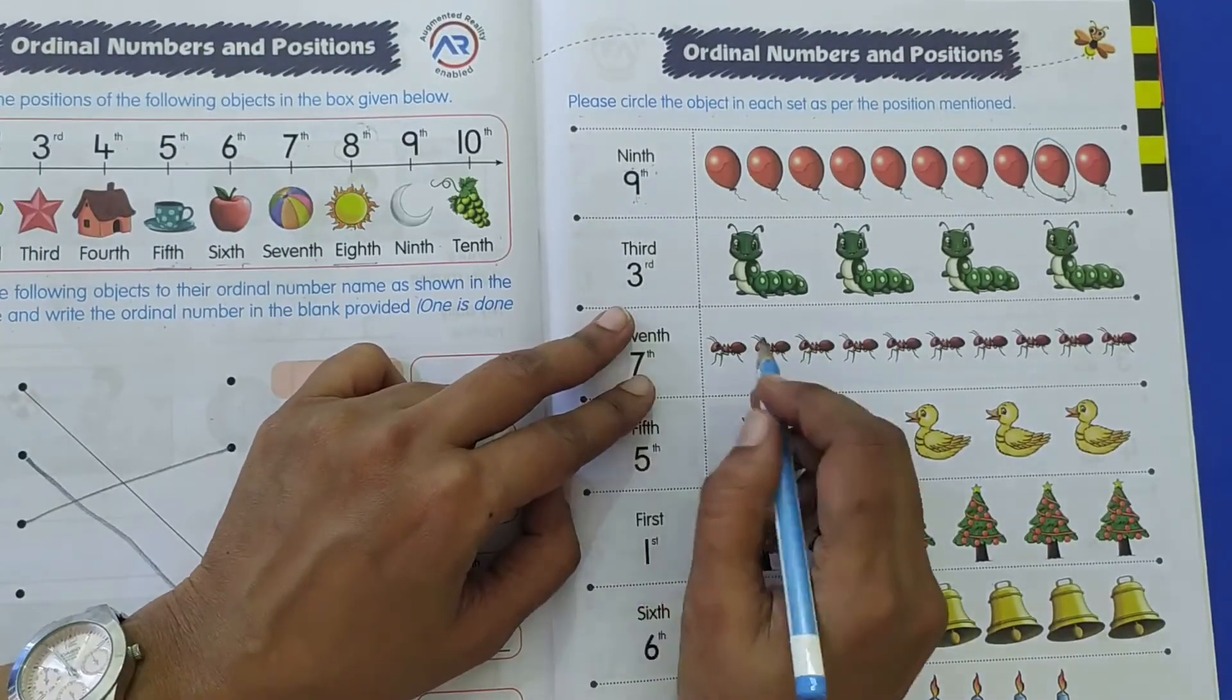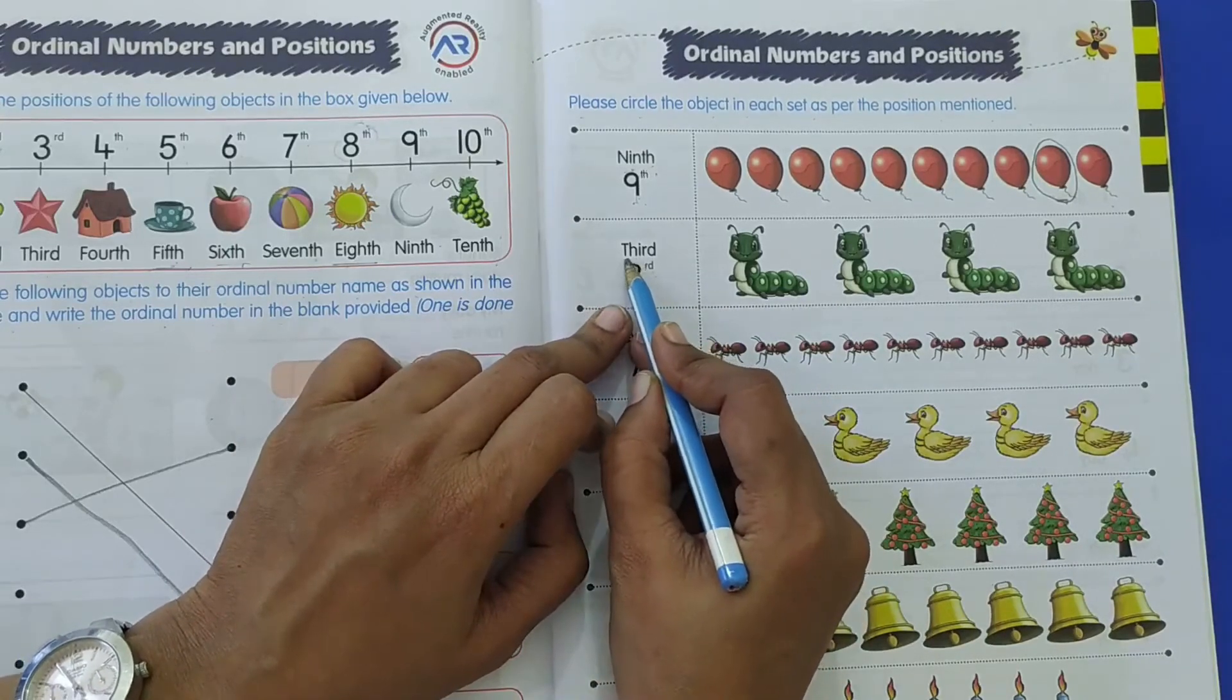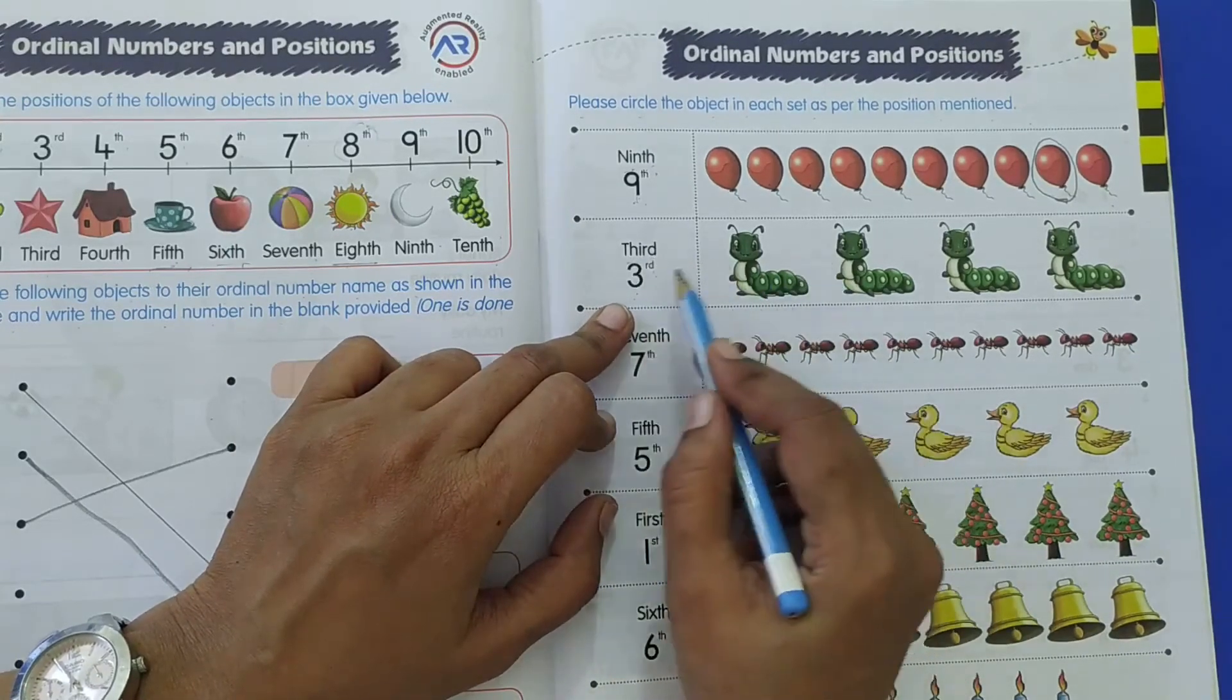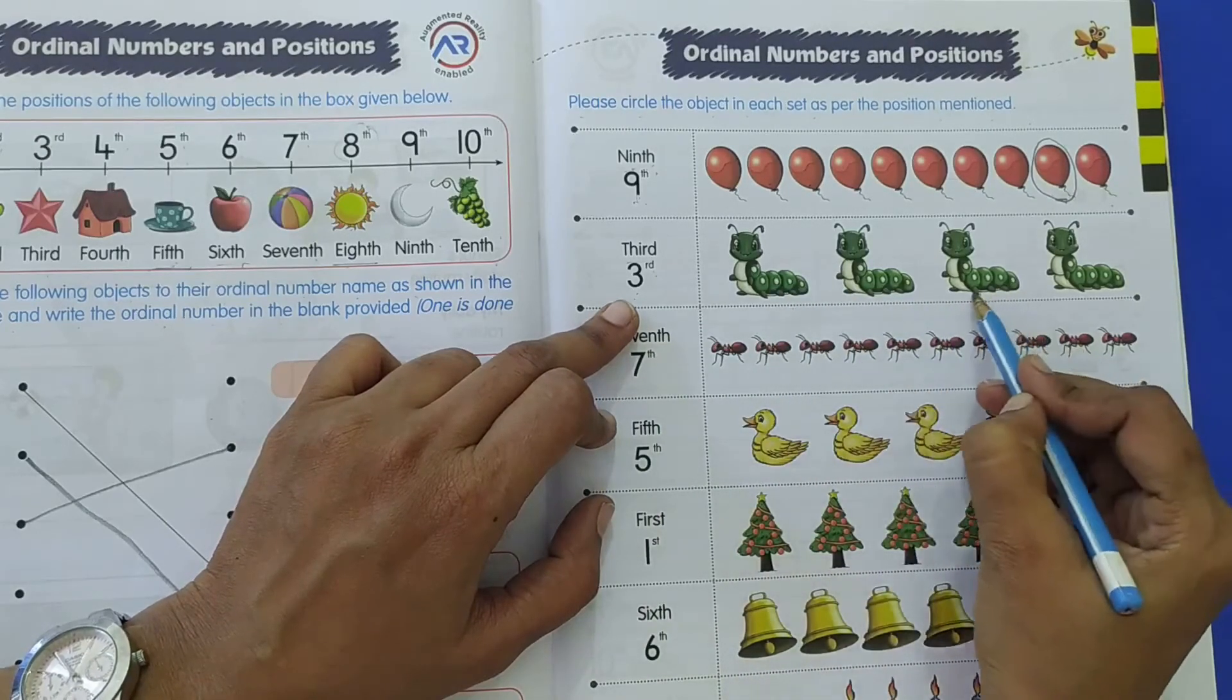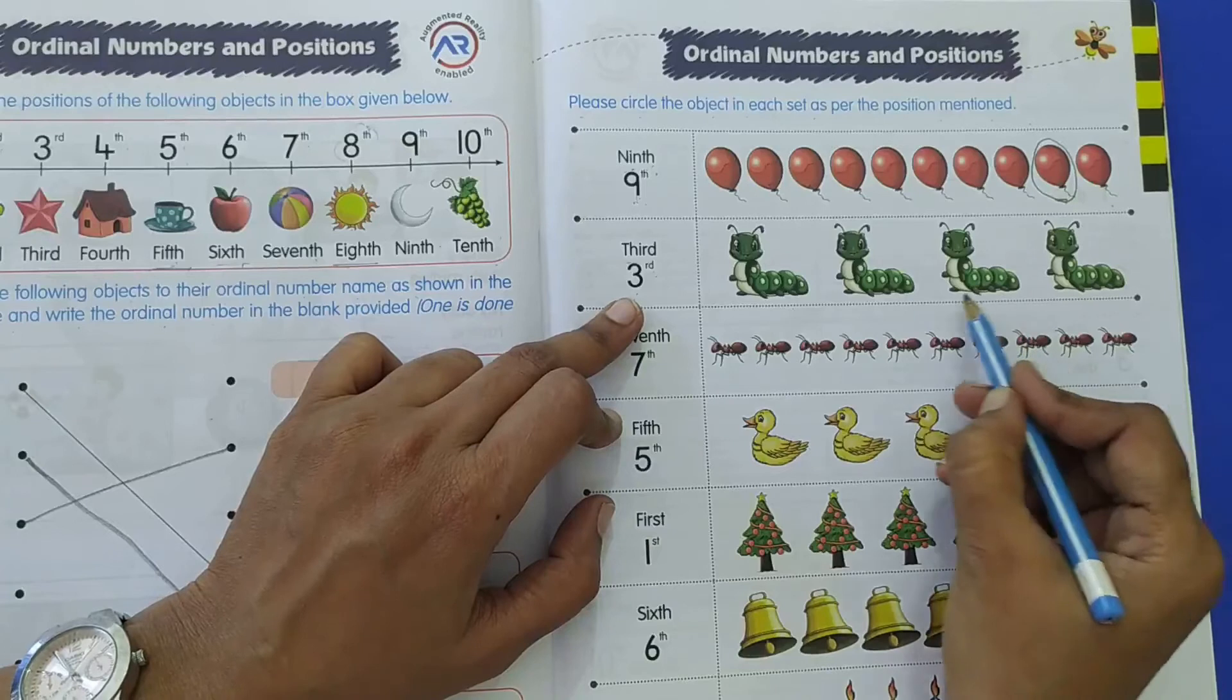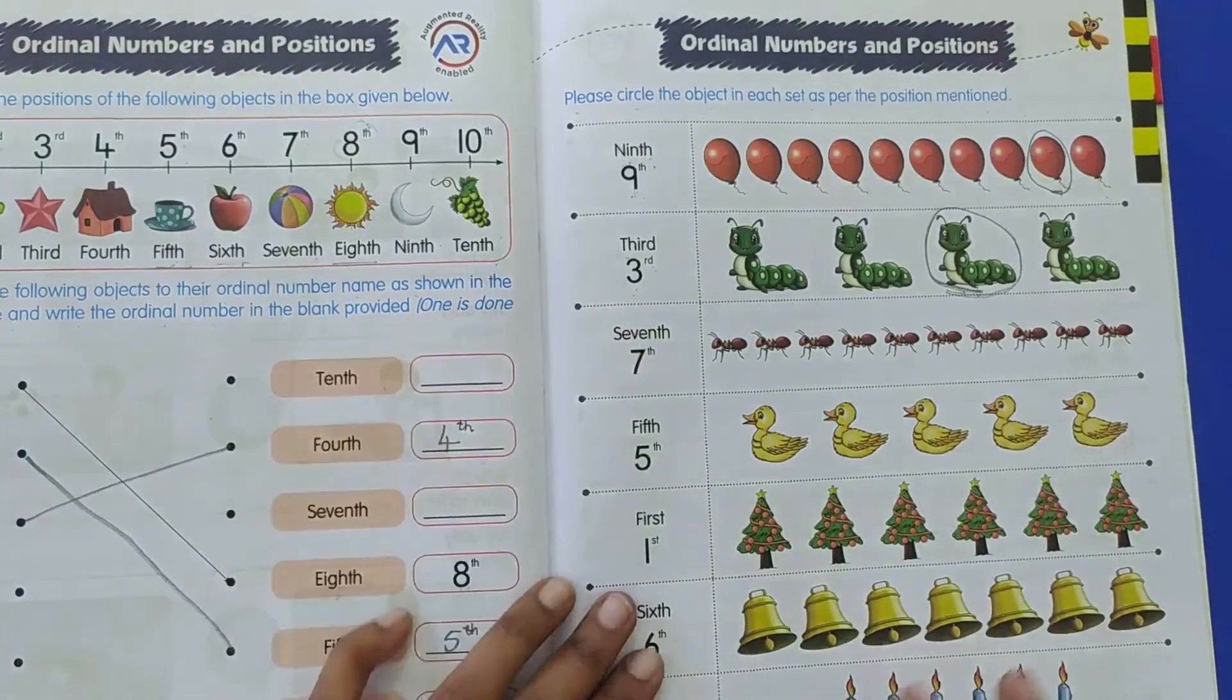Here you have to circle the caterpillar which is on the third position. So let's count: 1, 2, 3. So 3 means third position, so I will circle the caterpillar at this third position.